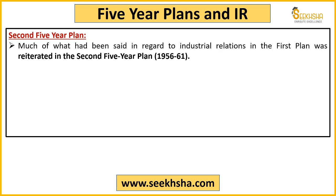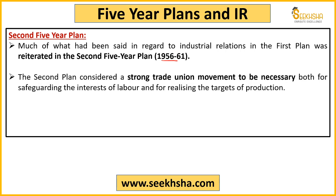Second Five Year Plan 1956 से 61 के बीच चला। First plan की बातें एक तरह से repeat हुईं। इसके अलावा Second Five Year Plan ने बोला कि trade union movement को strong करो। जब employee satisfied होगा, उसके पास collective bargaining का source आएगा trade union के through, और ultimately वो अपनी demands satisfy करवा पाएगा — तो production maximize होने के chances बढ़ेंगे।